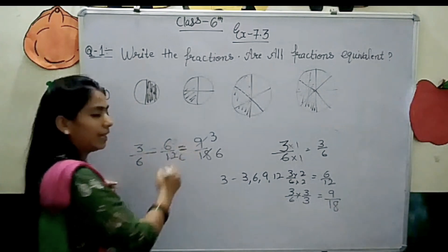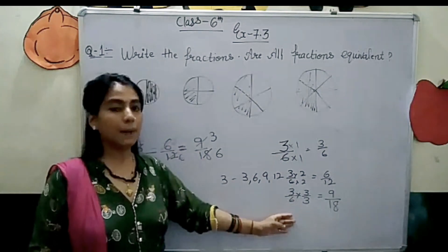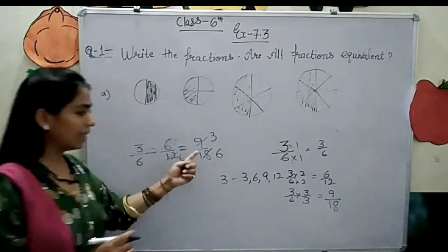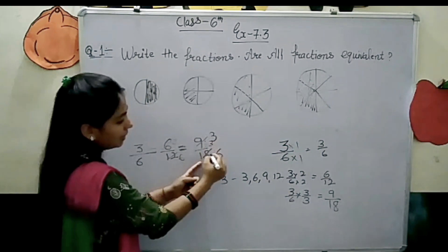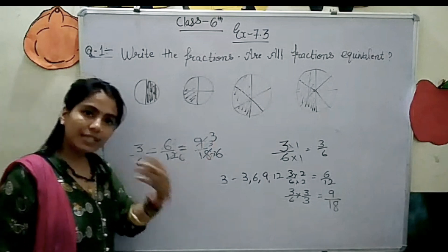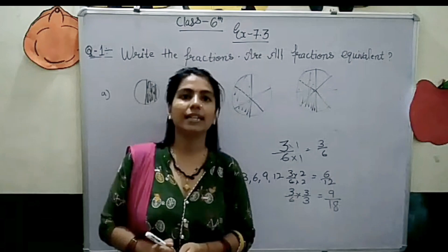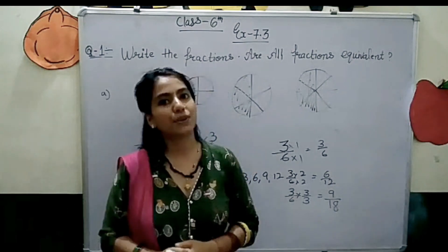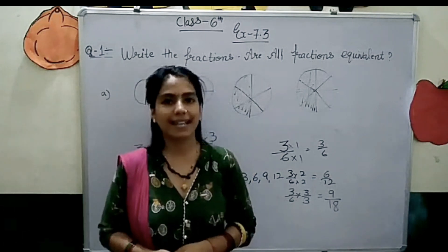They are all equivalent. How do we find them? We multiply and divide with the same number. We have divided with 3 to get 3 by 6 and 9 by 18. So this is called equivalent fractions, and on this basis only we will deal with exercise 7.3. You will understand better while solving the equations. So very quickly let's start our exercise questions.